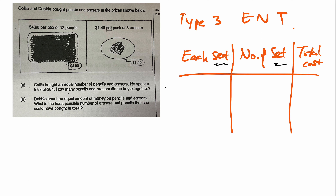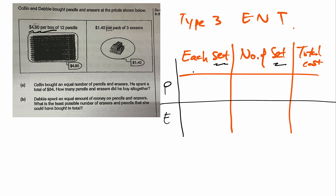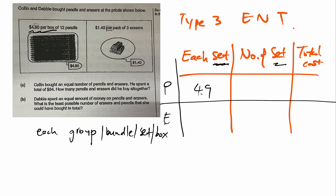So over here you have pencils and you have erasers. You know the cost per pencil set — $4.90 per box of pencils. 'Each set' means each box, each bundle, each group. Whenever you see 'group,' 'each group,' 'each bundle,' 'each set,' or 'box,' they can be other words but they all mean the same thing: each set. So there's a key word here.